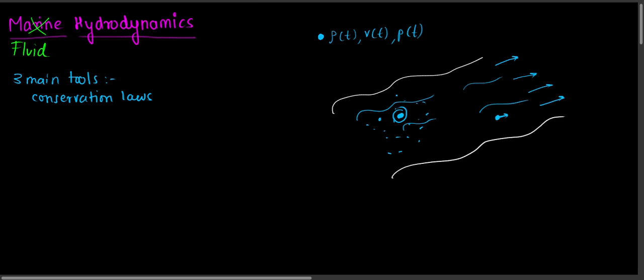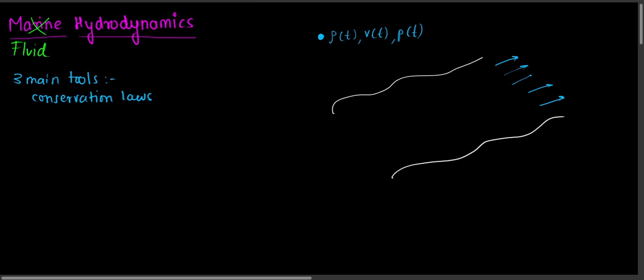You'll require a lot of computational power because you are considering the velocity, pressure, and density of each and every single particle. So instead, why not do something else? We know the flow is in this direction — we know the direction.